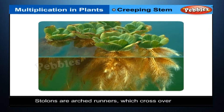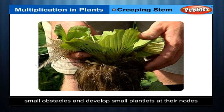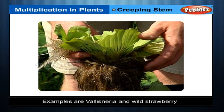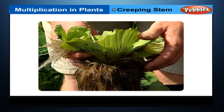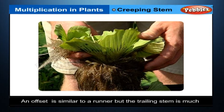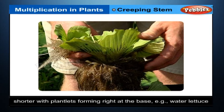Stolons are arched runners which cross over small obstacles and develop small plantlets at their nodes, e.g. valesinaria and wild strawberry. An offset is similar to a runner but the trailing stem is much shorter, with plantlets forming right at the base, e.g. water lettuce.